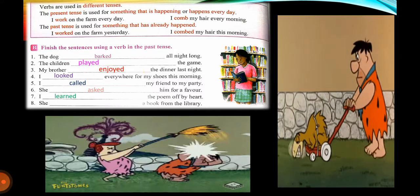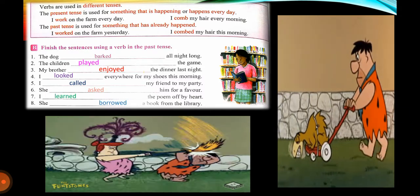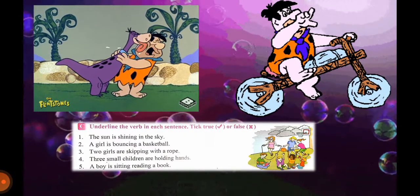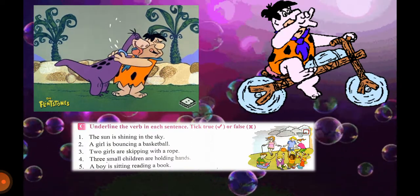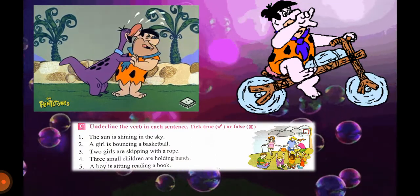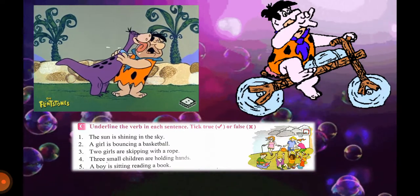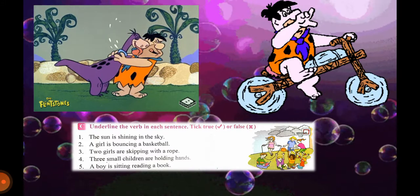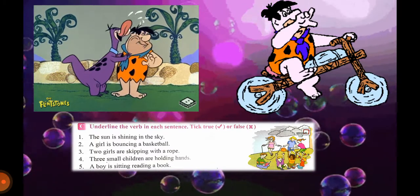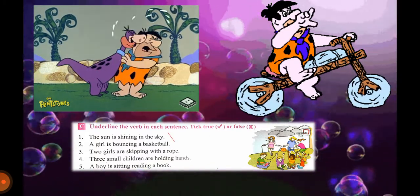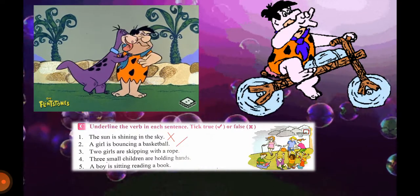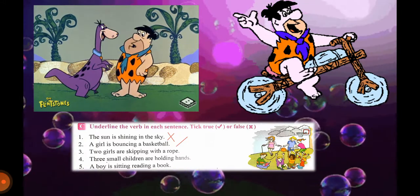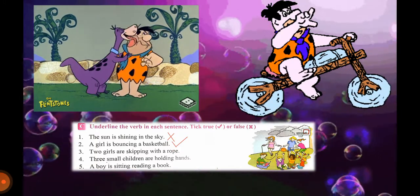Now we will move to Exercise C on the same page: underline the verb in each sentence. You have to underline the verb and tell whether it is correct or wrong. Number one — the sun is shining in the sky: look at the picture, is sunshine visible? No, so the statement is wrong. A girl is bouncing a basketball — tick.